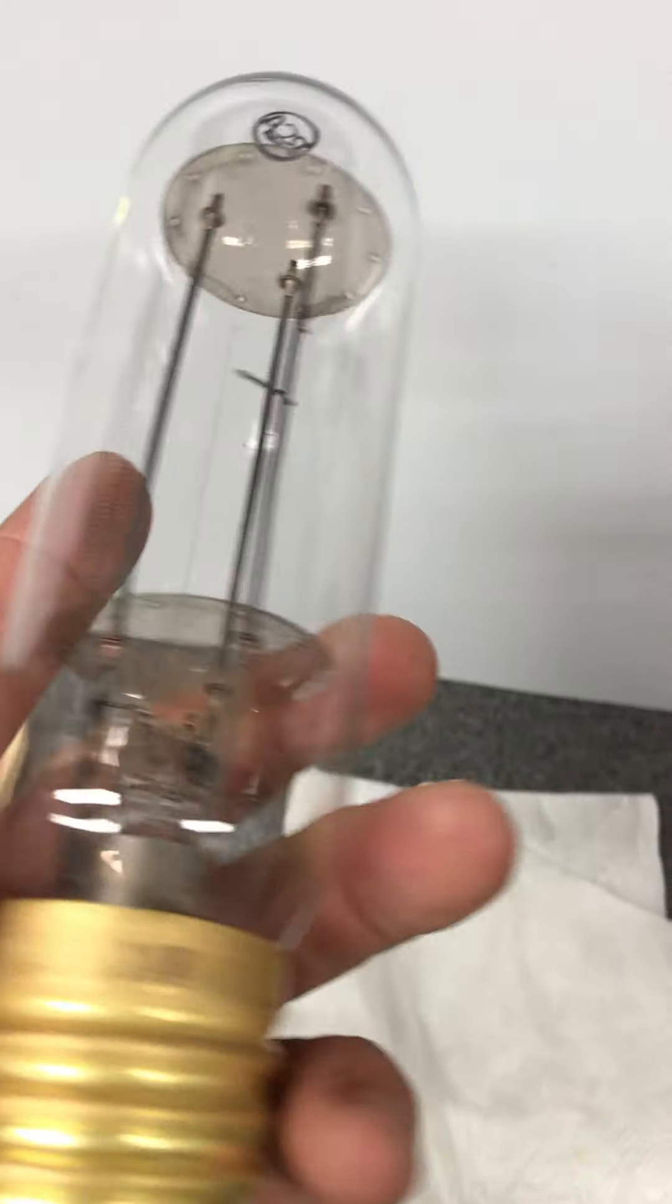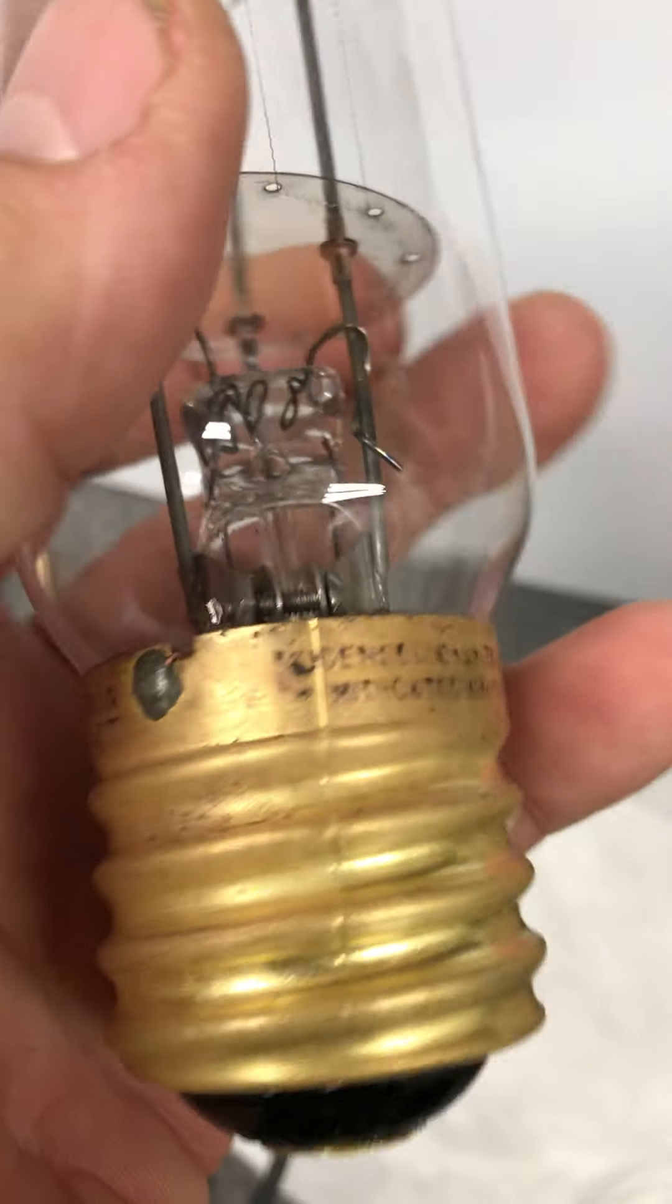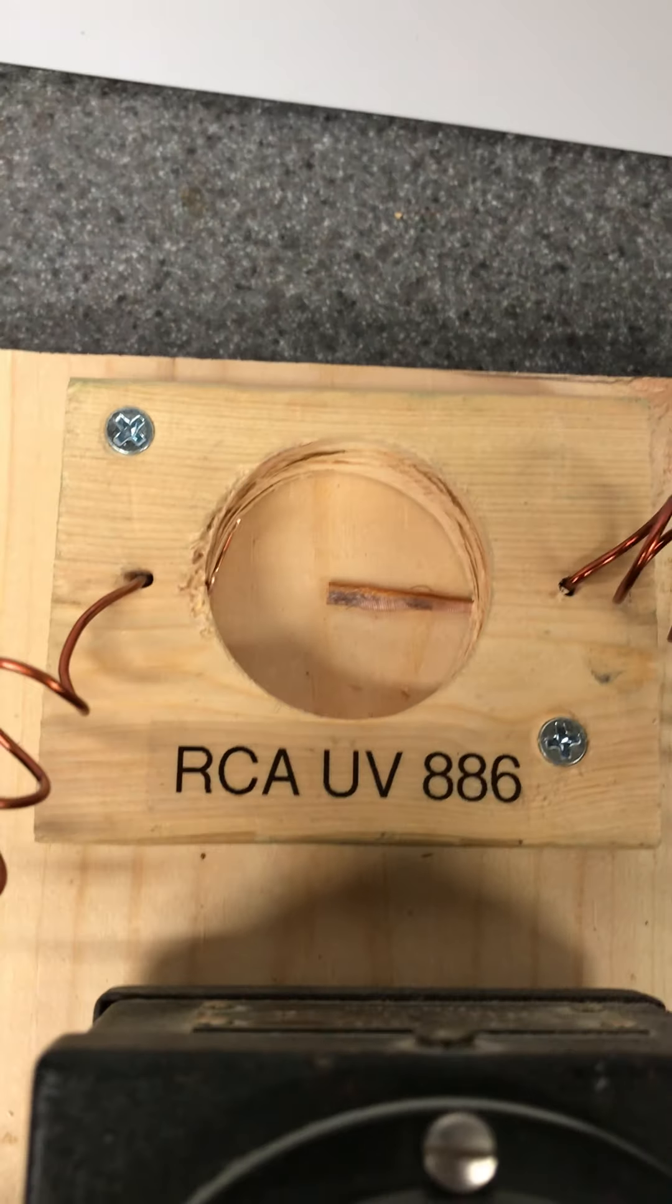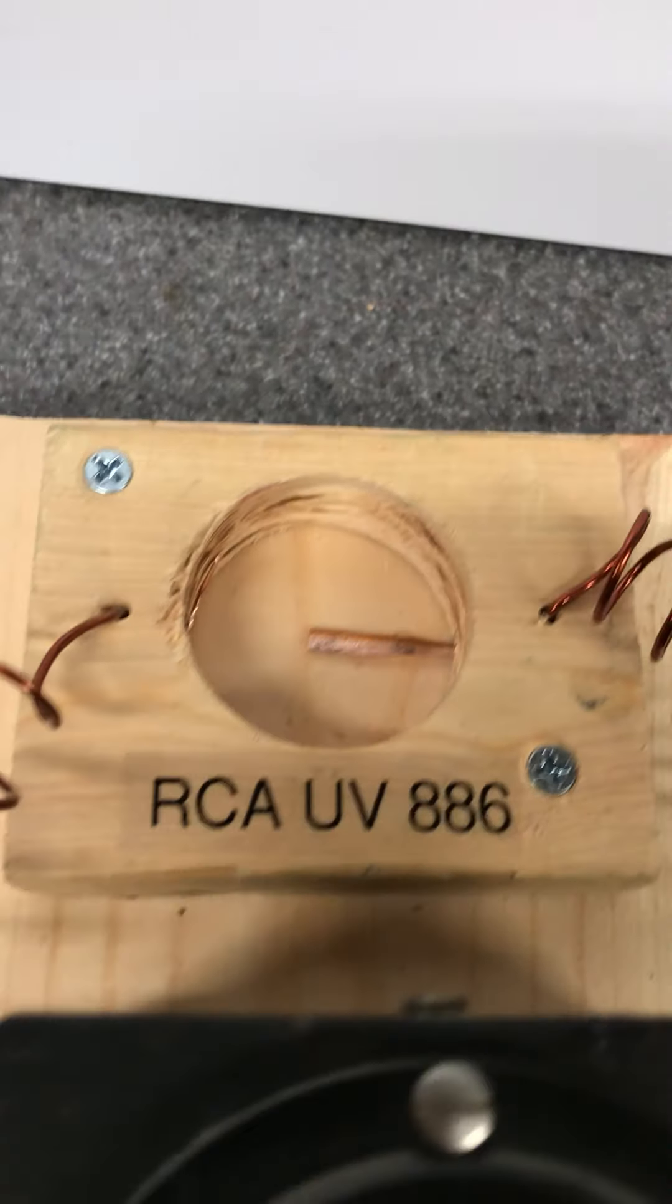John K6IR thinks it's got iron wire in there which has some sort of constant current properties when it gets to temperature, and my golly, I think he's right. So I built a little testing setup here. They labeled it RCA UV-886.